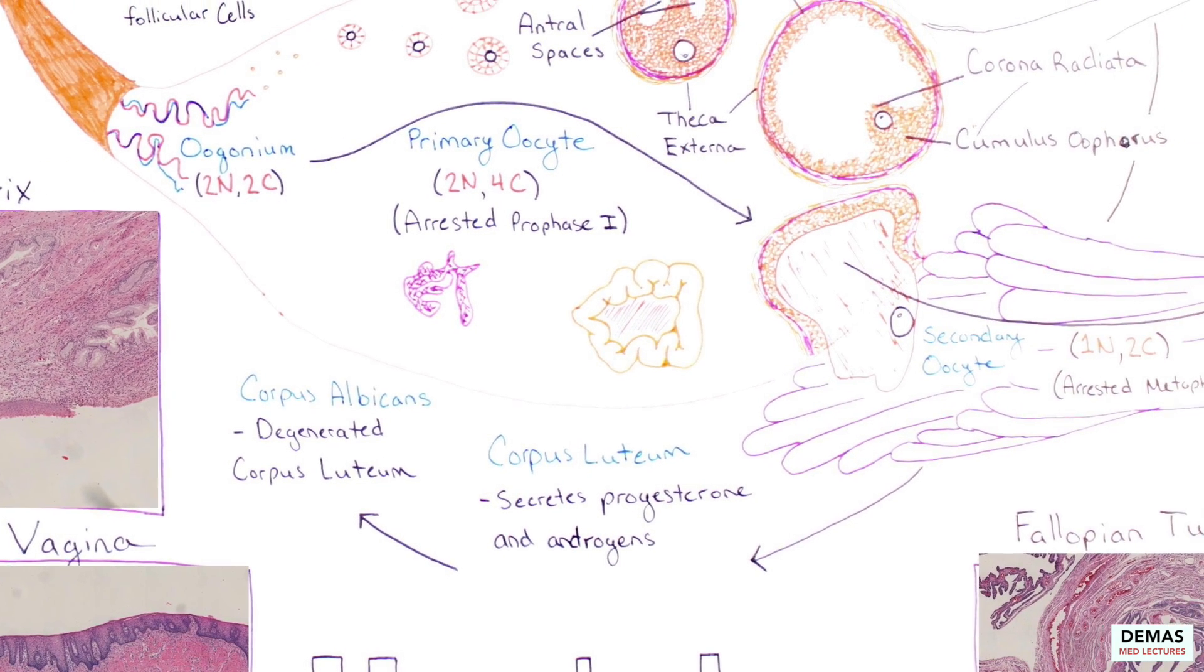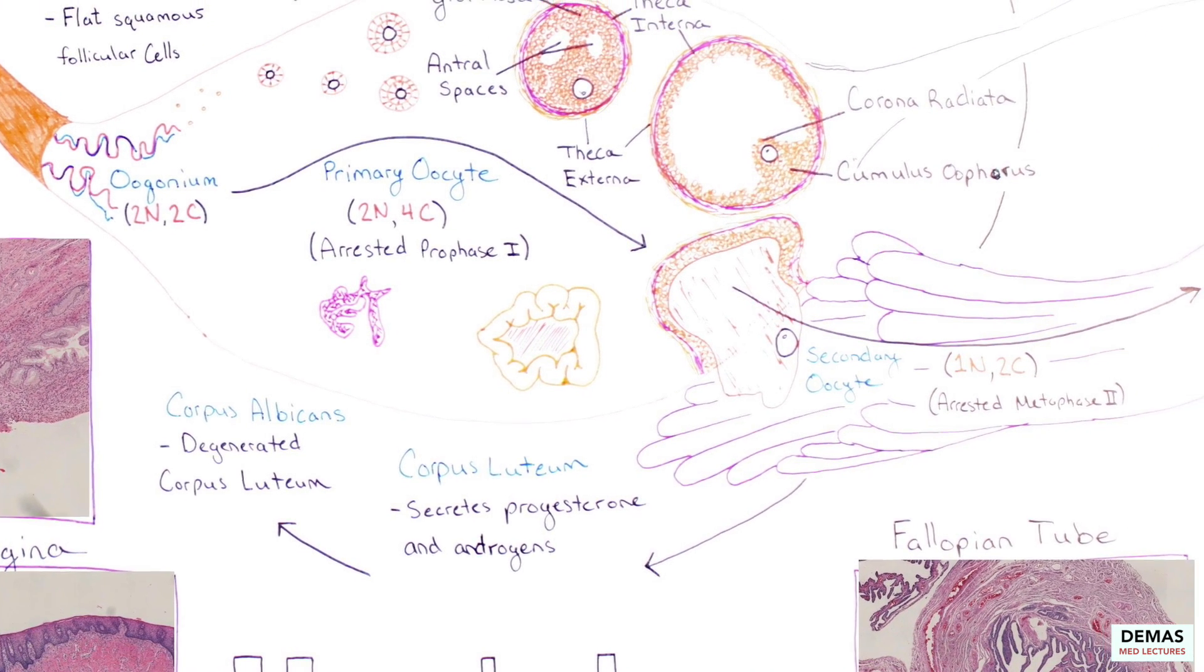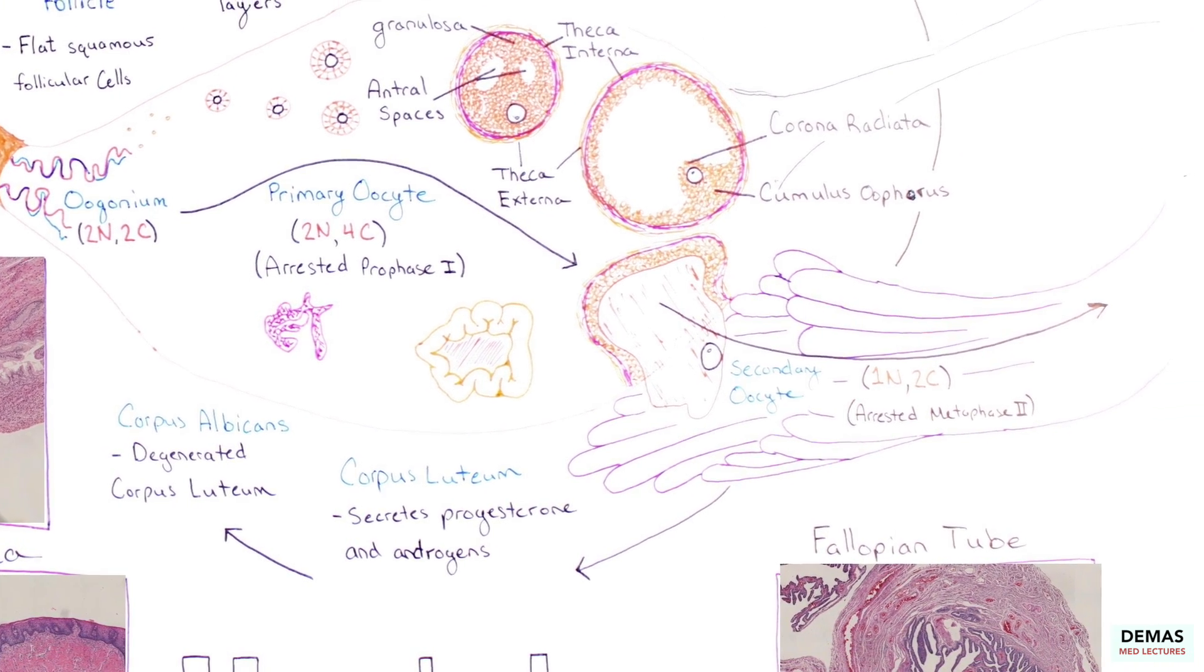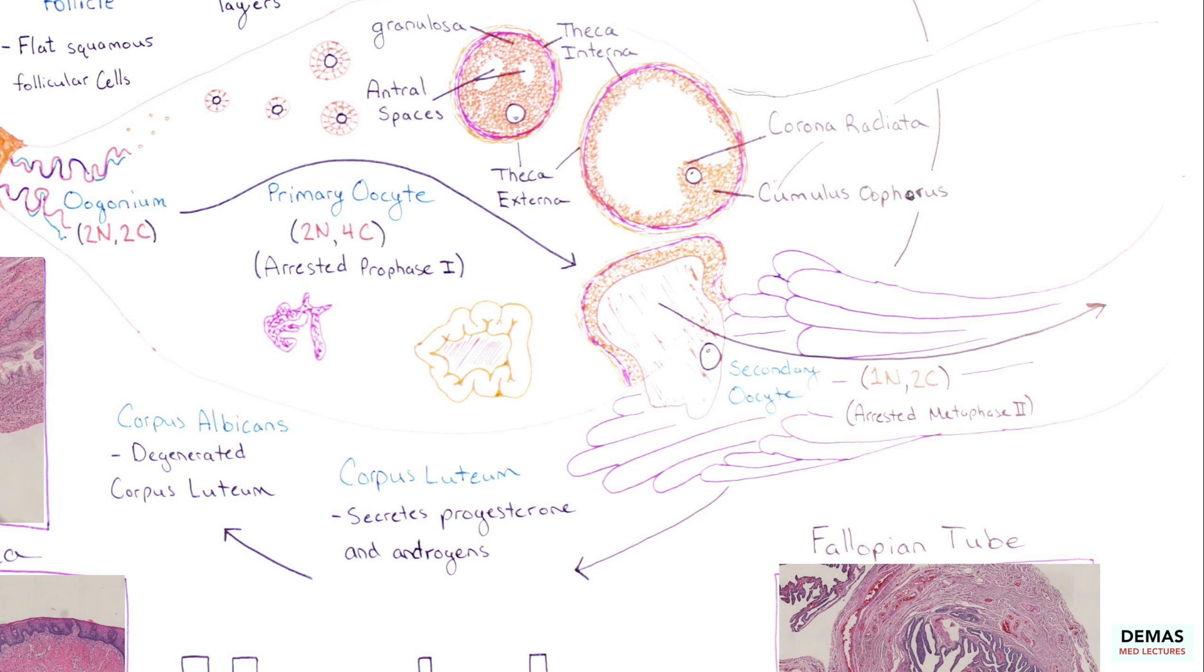However, if fertilization does occur, the secondary oocyte completes meiosis II and becomes a haploid ovum with 1N1C prior to fusion with the haploid sperm, which is also 1N1C, to become a diploid zygote 2N2C.